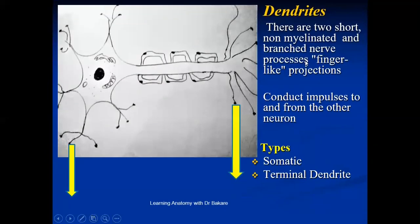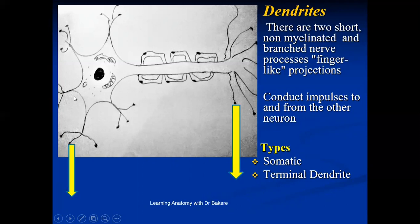We also have the dendrites. The dendrites are short unmyelinated branched networks. What they do basically is to conduct neural impulses from one cell down to the neighboring cell. They are basically of two types: somatic dendrites, which are located around the cell body of the neuron, and terminal dendrites, which are located at the terminal portion of the axon.